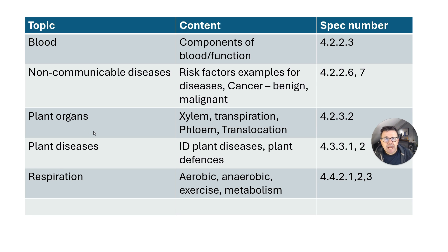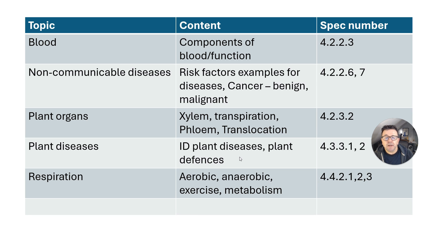Plants are an area where you can actually gain marks — many students don't like plant questions and don't answer them. Make sure you learn about plant organs: leaf structure, xylem and phloem, particularly transpiration streams, and maybe the use of a photometer to calculate the amount of transpiration occurring in a plant. Also cover plant diseases related to ion deficiencies and plant defences against predators.